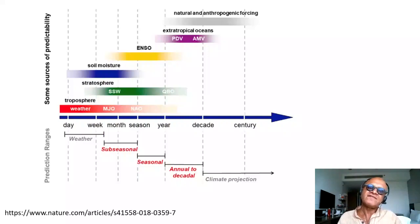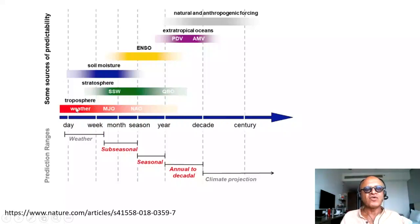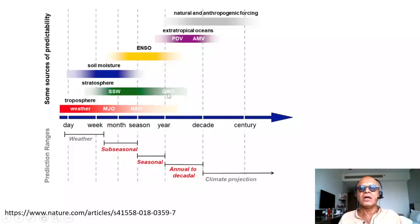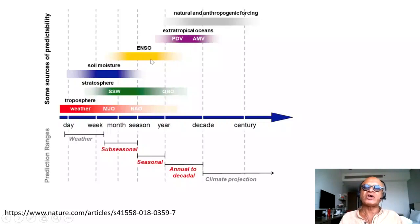This is a paper from Jochen, Kushner and colleagues which looks at sources of predictability at various timescales — going from weather to sub-seasonal processes like the Madden-Julian oscillation, the North Atlantic oscillation, sudden stratospheric warming, quasi-biennial oscillations, soil moisture, ENSO (El Niño Southern Oscillation), Pacific decadal variability, Atlantic multi-decadal variability, and then natural and anthropogenic forcings. These are predictable because we know the processes controlling the observed patterns of these variabilities at some timescales.